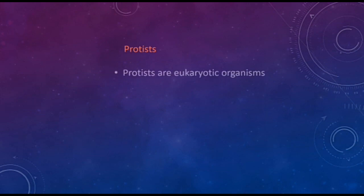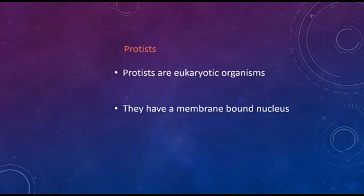Protists are eukaryotic organisms — they have a membrane-bound nucleus. Membrane-bound nucleus means that the nucleus of protists has a wall around it. They have a proper membrane around their nucleus, unlike monera.